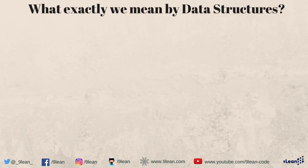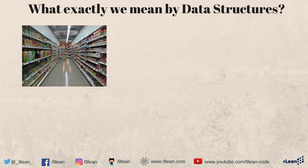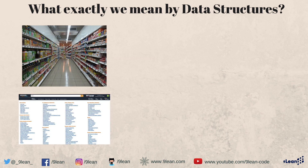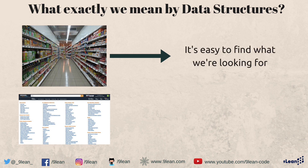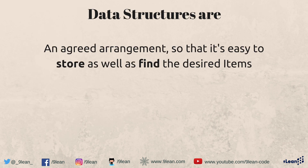Now let's talk about what exactly we mean when we say data structure. Data structures are an accurate arrangement where it's easy to store and find the desired items. For example, let's take the case of a supermarket or an online e-commerce website like Amazon. In both cases it's very easy to find what we are looking for. We don't search the whole supermarket or the whole Amazon website — it's easy because items are arranged in a certain way, and because of this predefined arrangement it's also easy to put things on the shelf or into the website.